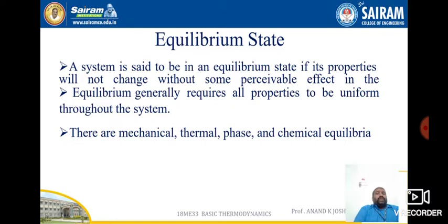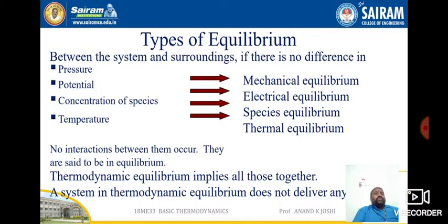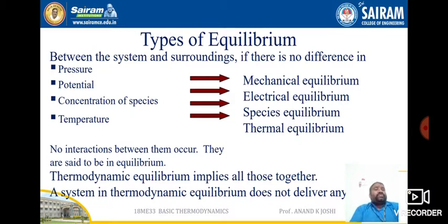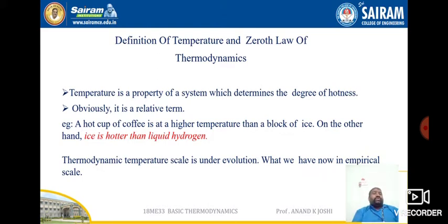Equilibrium generally requires all properties to be uniform throughout the system. There are three types of equilibrium: mechanical, thermal, and chemical equilibrium. For mechanical equilibrium, pressure should be balanced; for electrical equilibrium, potential must be equal; for species equilibrium, concentration must be equal; and for thermal equilibrium, temperature must be equal. Overall, a system in thermodynamic equilibrium does not deliver any of these imbalances.